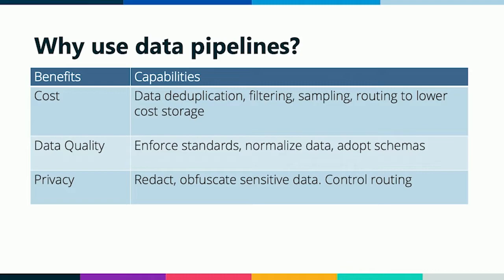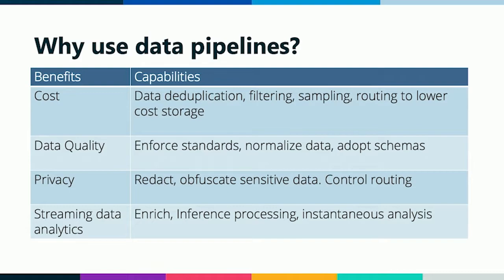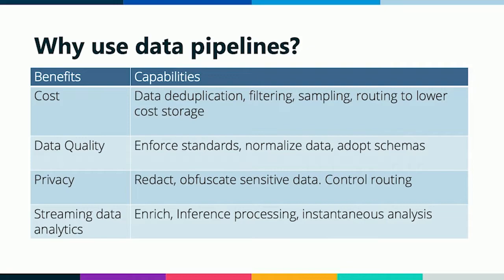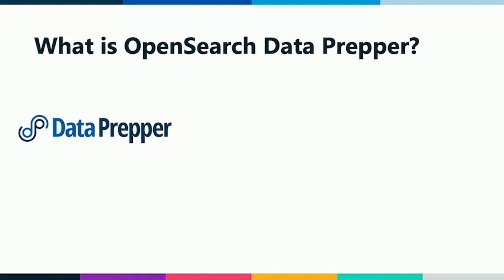We all care about our users' privacy, and a pipeline will really help here. We can use a pipeline to redact data that is sensitive to our customers, or remove it entirely so it's never stored in your OpenSearch domain. We also have the option to control routing — some people have compliance requirements where data can only go in certain geographic regions. We can also do streaming data analytics, for example enrichment through GeoIP, enriching right in the pipeline rather than later in OpenSearch.